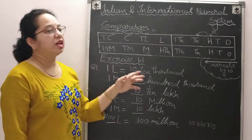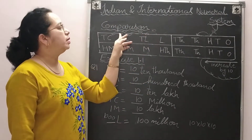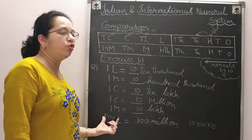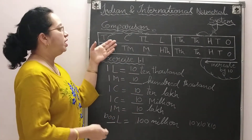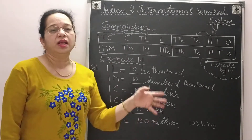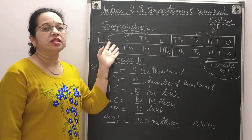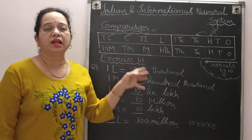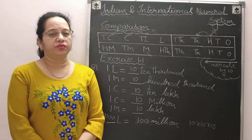So this is the way — sometimes you need to find how many jumps are required and then multiply 10 × 10 × 10 or 10 × 10 accordingly to fill the number. This is how we do comparison of Indian and international number systems. Whenever such questions come up, write the place values one above the other in your rough column or right margin so comparison is easier. Thank you for watching today's video.